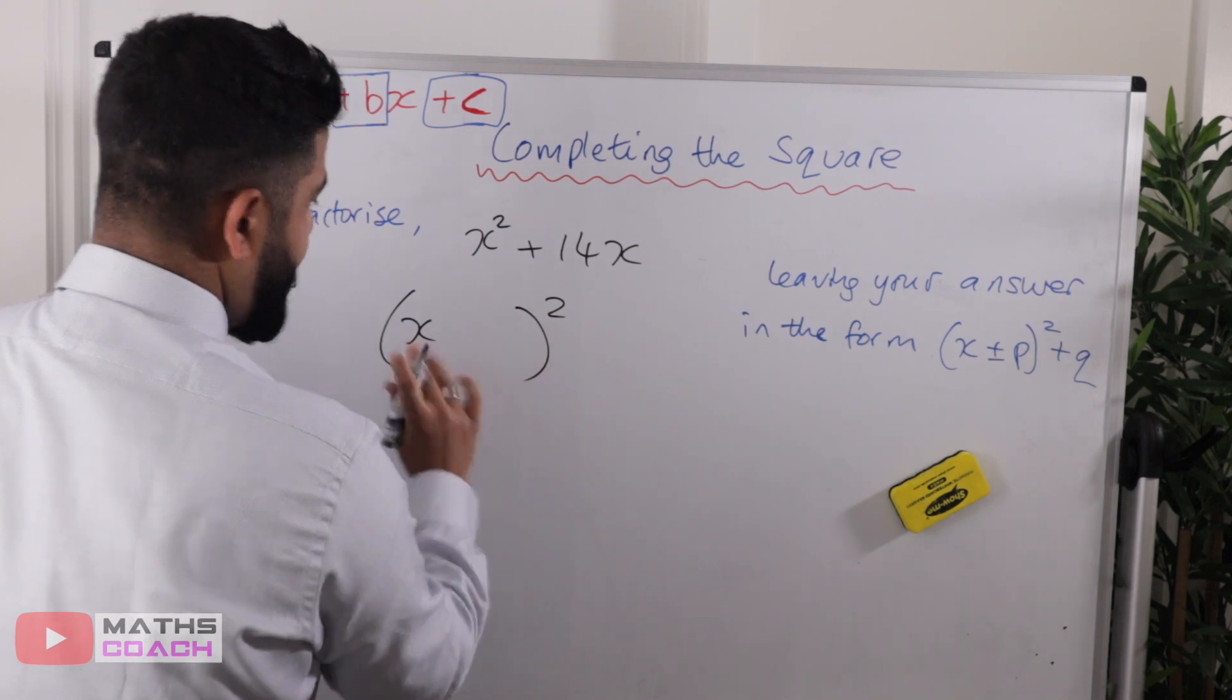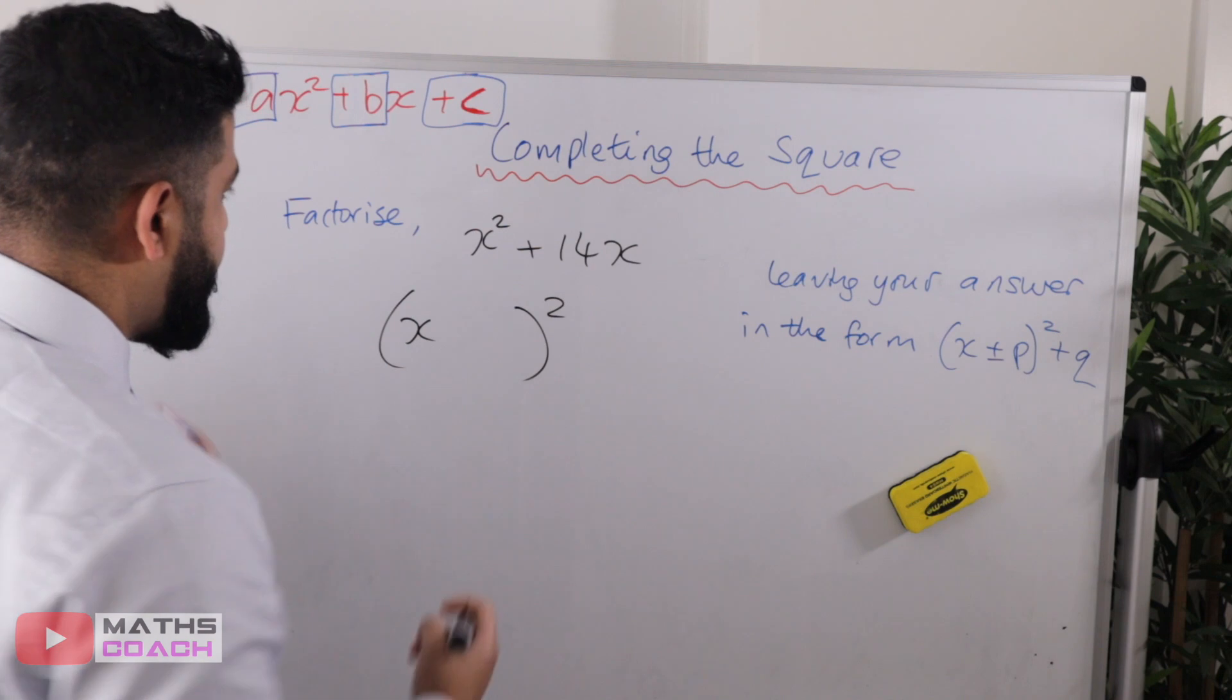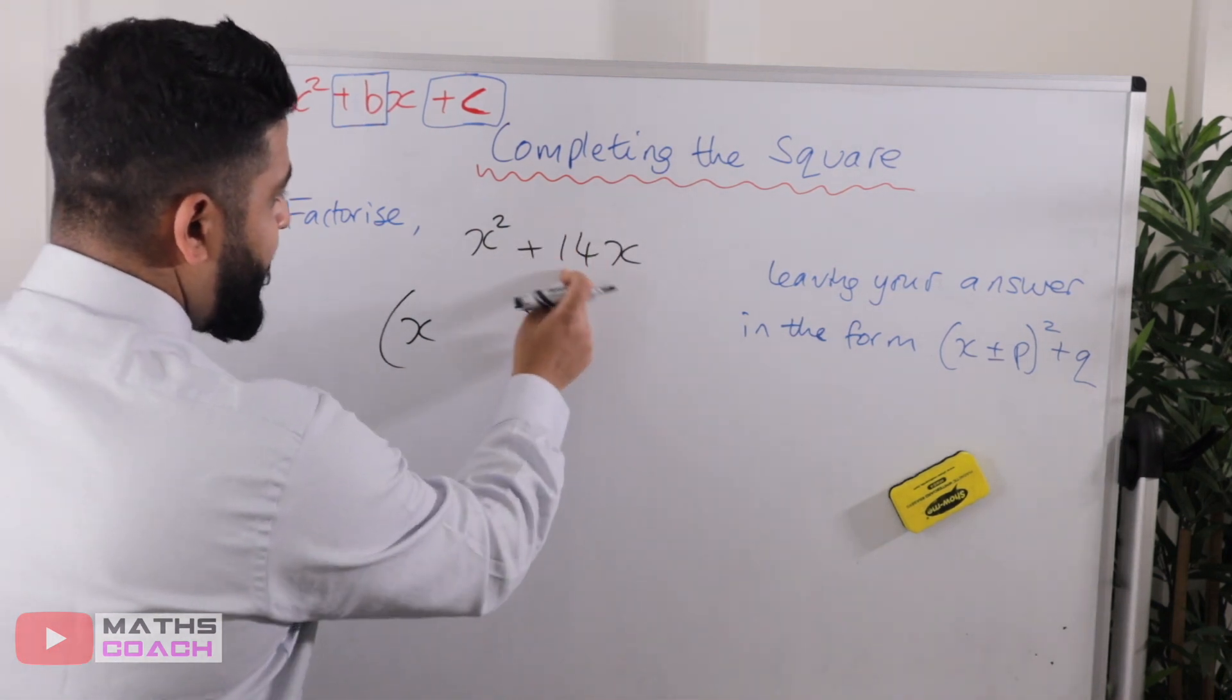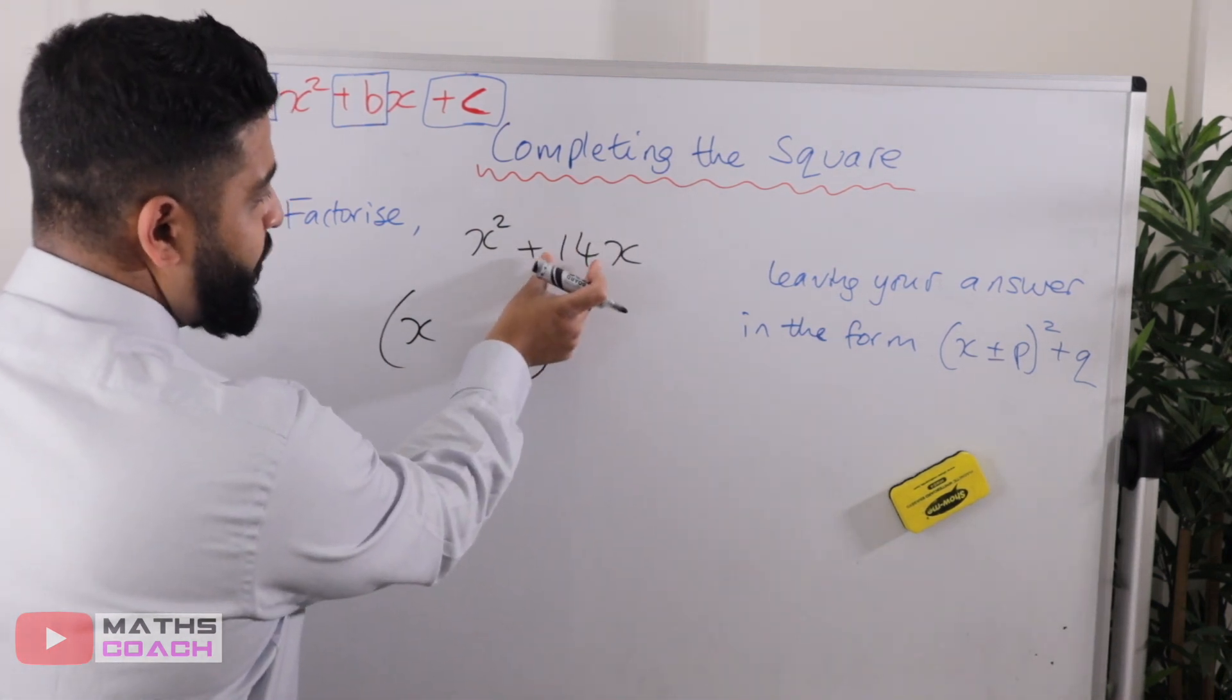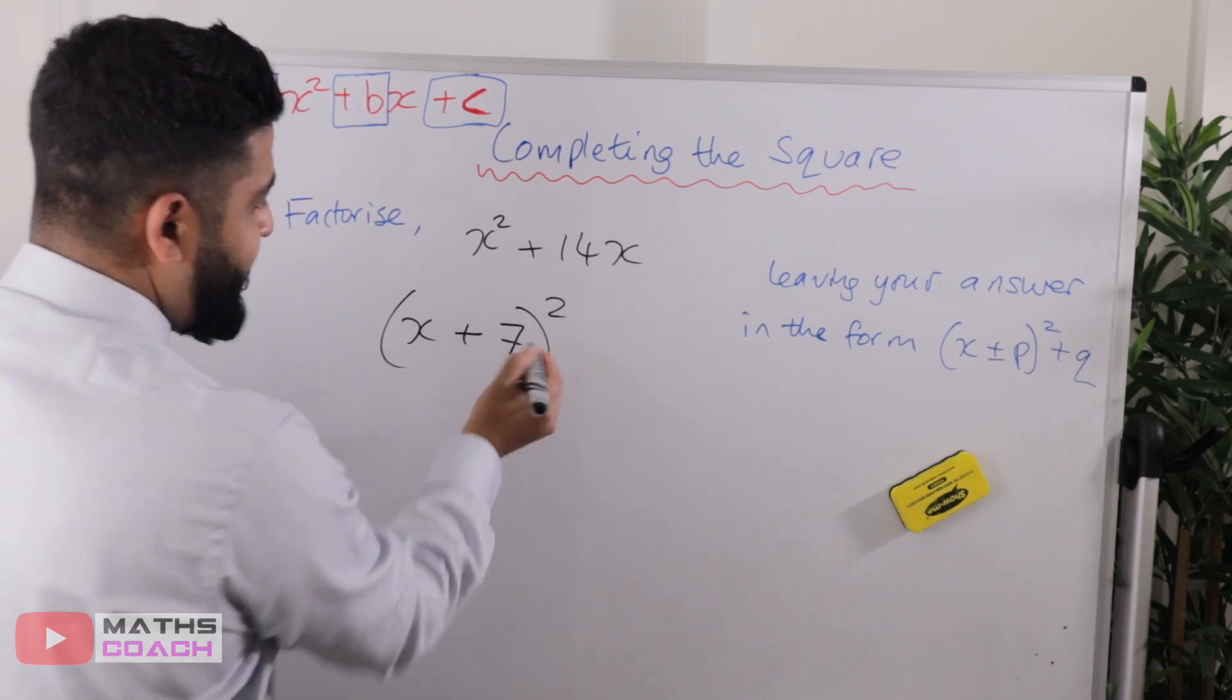So x squared, and that's it. This is like your sort of your cloak for completing the square. Step number two, take the coefficient of b, which is fourteen, positive fourteen, and divide it by two. So half of fourteen is seven.